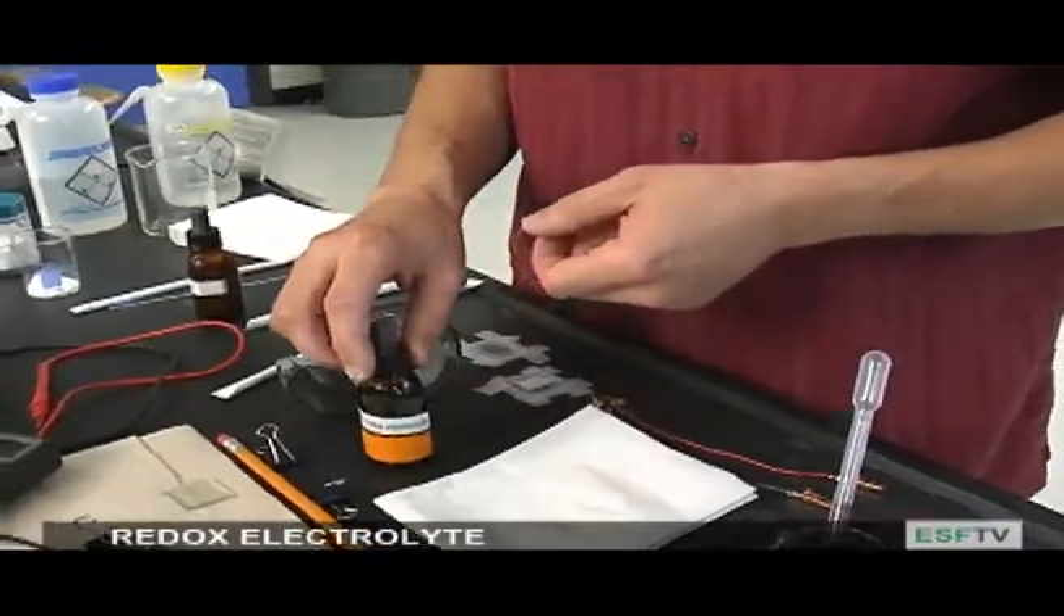The first thing we're going to do is make a paste using the titania. This titania is going to act as a conductor for the electrons. I've placed some titania paste inside this beaker and we're going to make a slurry using some nitric acid, dilute nitric acid.